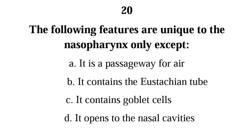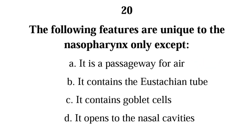Number 20. The following features are unique to the nasopharynx only except: A. it is a passageway for air, B. it contains the Eustachian tube, C. it contains goblet cells, D. it opens to the nasal cavities. The correct answer is A. The nasopharynx uniquely contains the Eustachian tube, contains goblet cells, and opens to the nasal cavity. However, the nasopharynx, oropharynx, and laryngopharynx are all passageways for air.